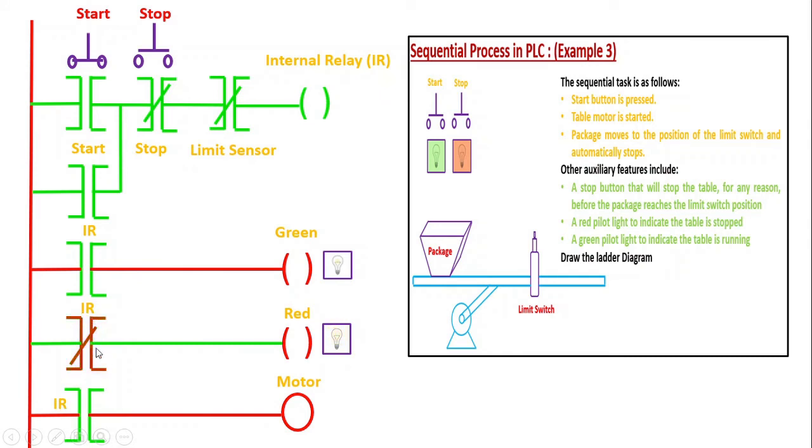But if you carefully observe here, it gets de-energized because I'm using a normally closed contact. Because IR was energized, here, since a normally closed contact, which was initially short circuit, will act as open circuit.